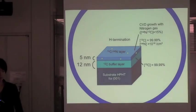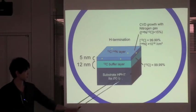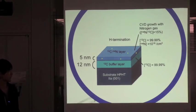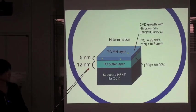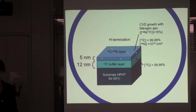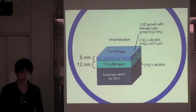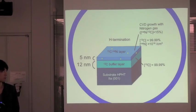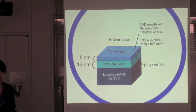With this concept, we grew this sample. On the diamond substrate, which has no NV center, 12 nanometer carbon-12 buffer layer was grown by chemical vapor deposition growth, which also has no NV center because no nitrogen gas was supplied during the growth.